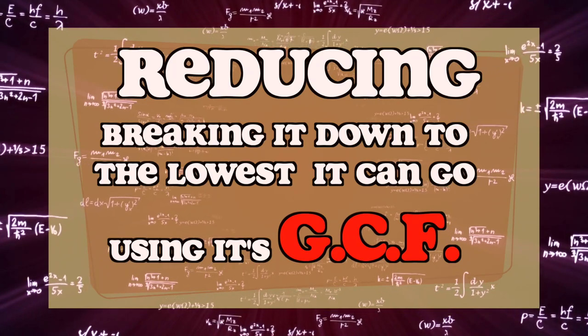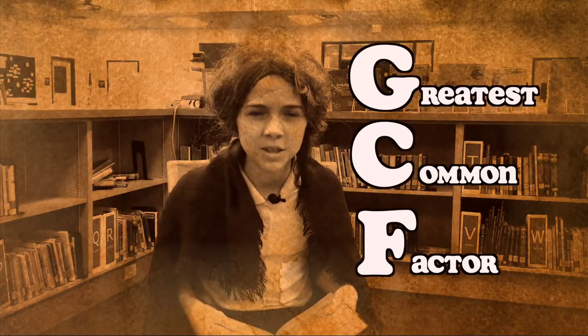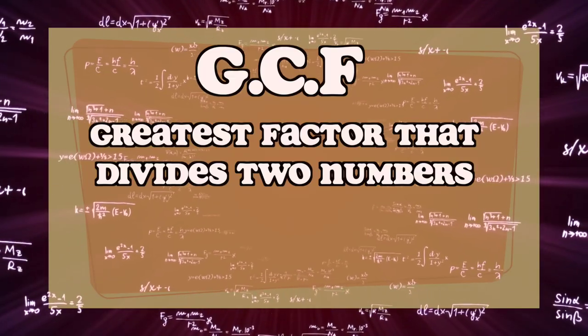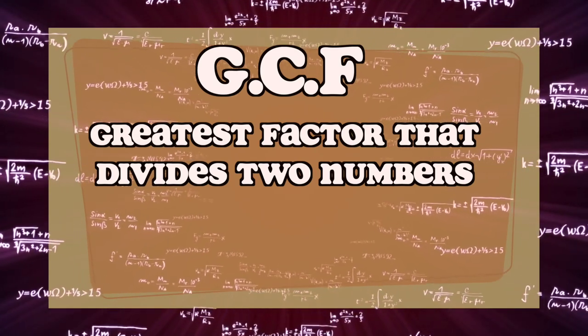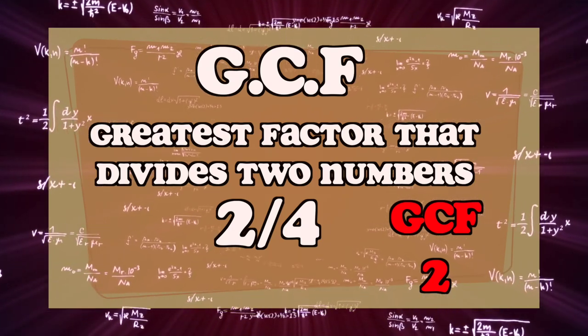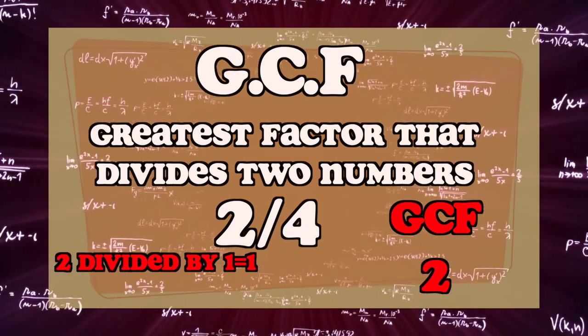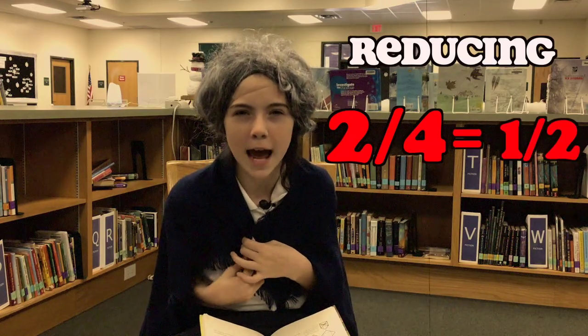Reducing a fraction means breaking it down to the lowest it can go using its GCF. Now what does that mean again? Greenest coloured flower? Greatest cup flowing? Greatest common factor! The greatest common factor is the greatest factor that divides two numbers. In our example of two-fourths, the greatest common factor is two, because two can't go into three. So two divided by two is one, and four divided by two is two. So two-fourths reduced would be one-half.